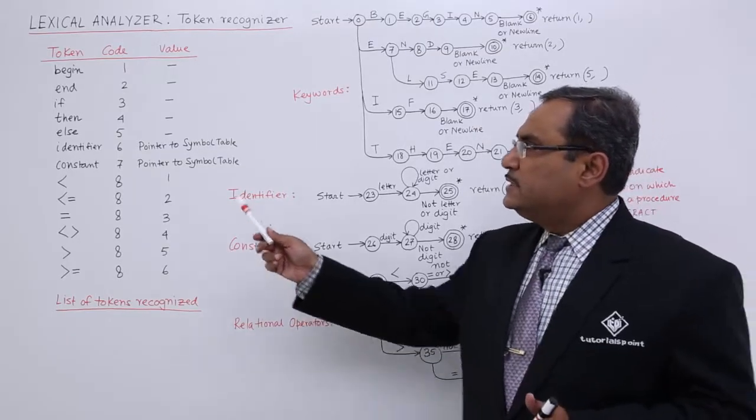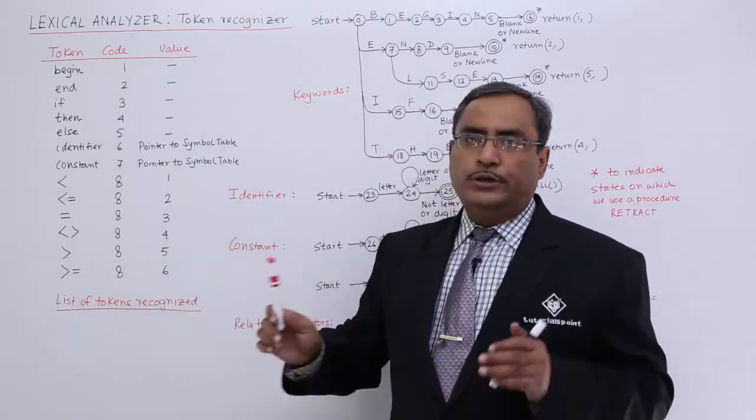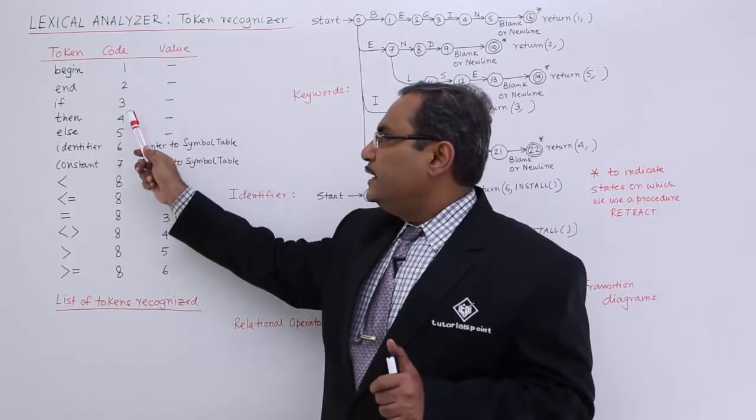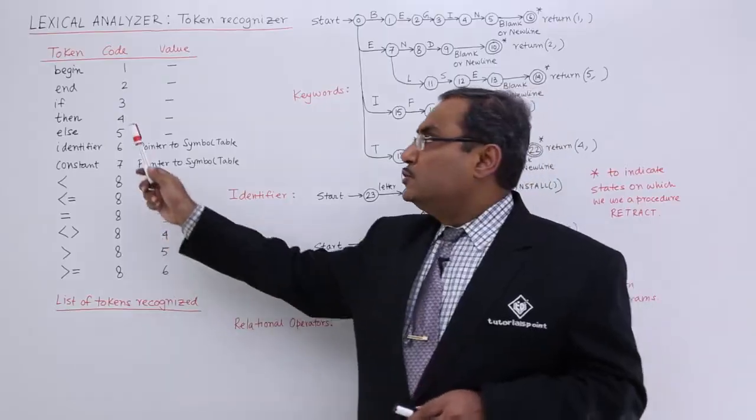Let us suppose this is the series of tokens which a lexical analyzer can recognize. This is the respective code and this is the value.